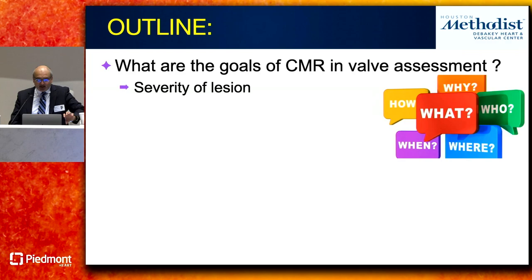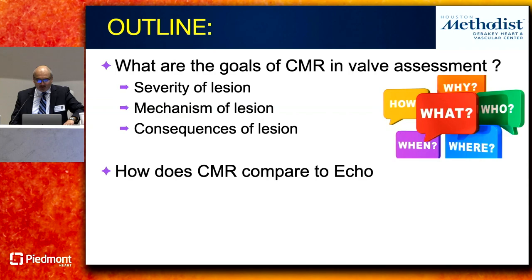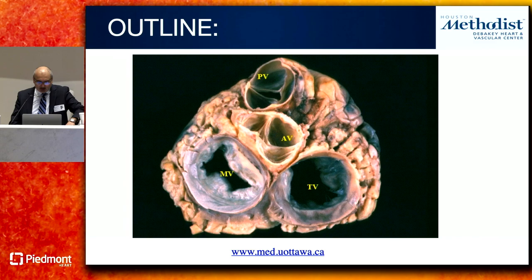The goals we try to achieve are: determining the severity of the valvular lesion, looking at the mechanism of the abnormality, and — a real strength of CMR — assessing the consequences of that lesion, meaning the remodeling that occurs to the ventricle or atrium. We'll also touch on how CMR and echo compare, and scenarios where MRI is most useful.